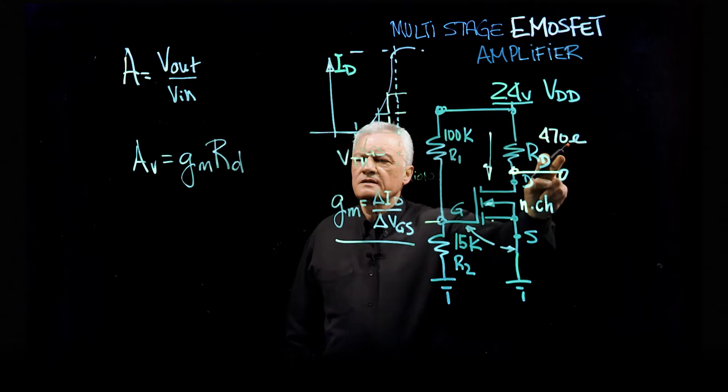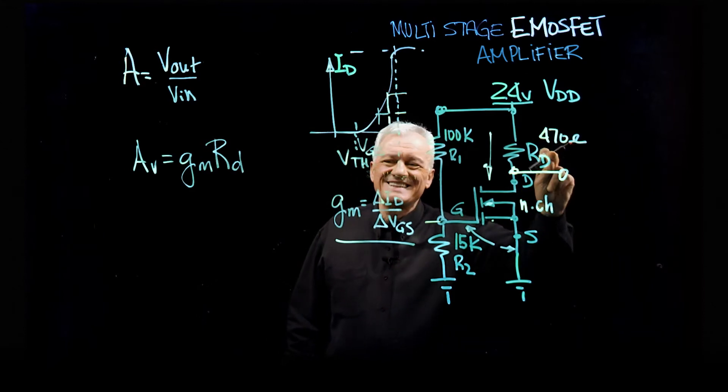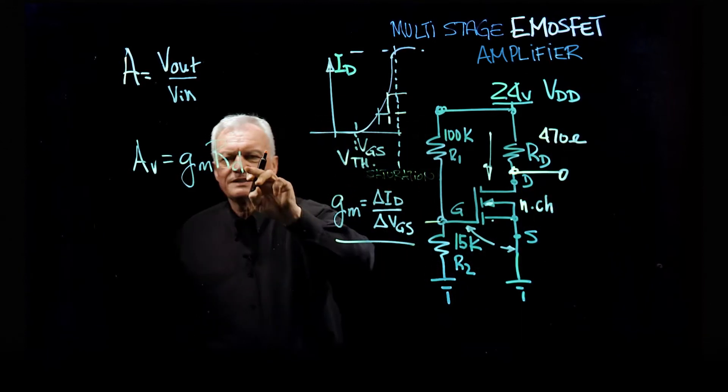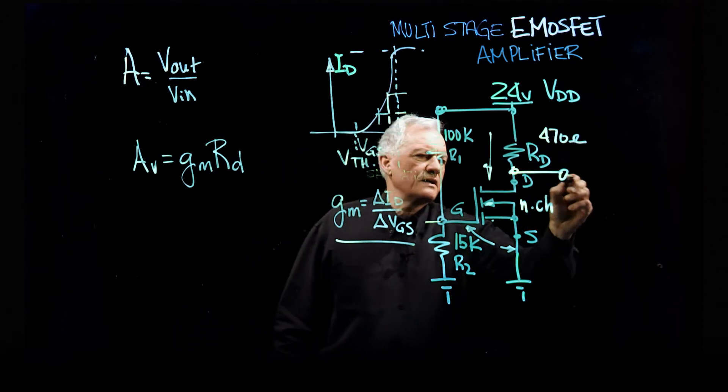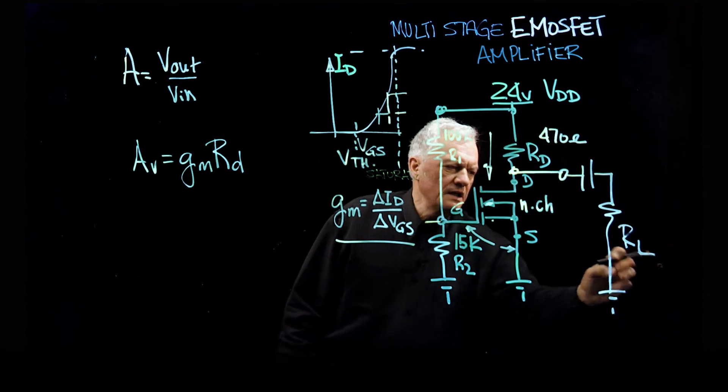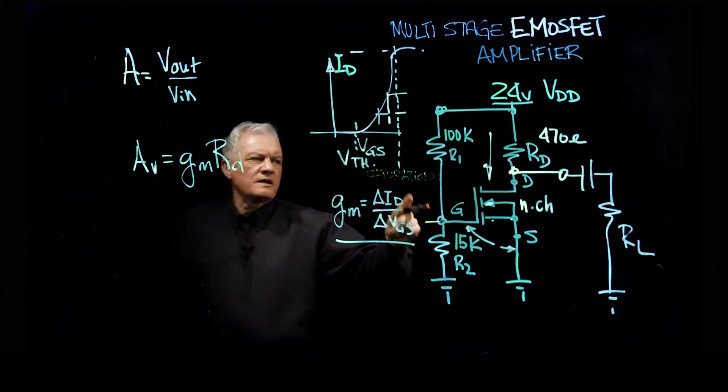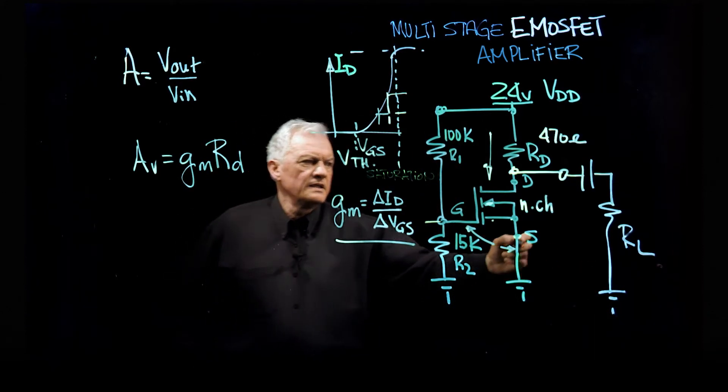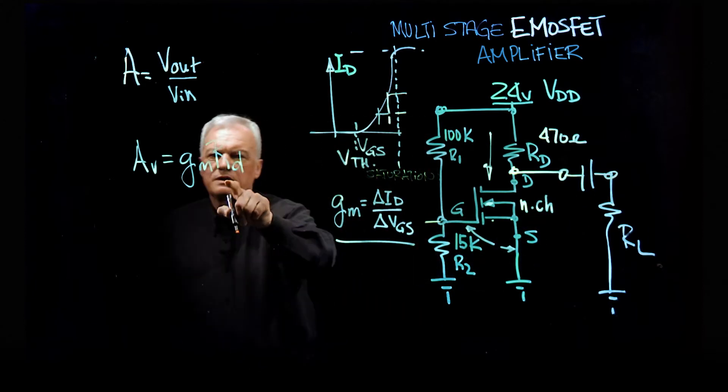this is a capital D. This is a DCD. This is a small d. If I had another circuit here, sorry, another load, if I had an RL, then we're looking at RD in parallel with RL in order to come up with the small RD.